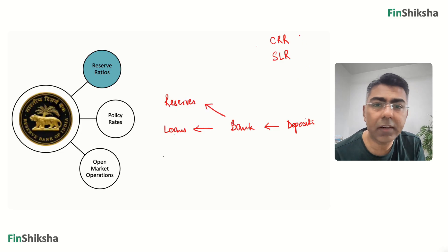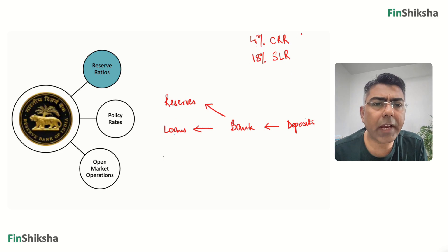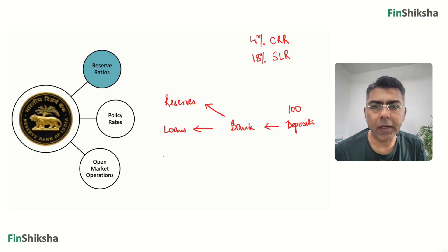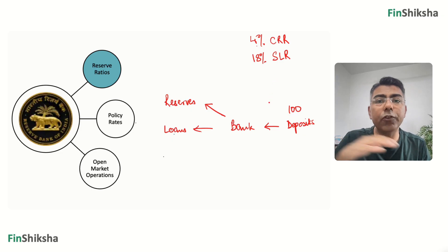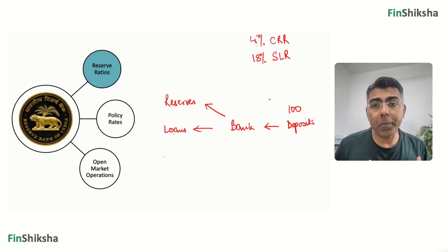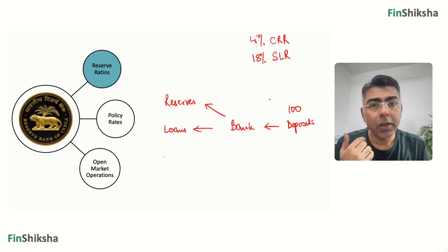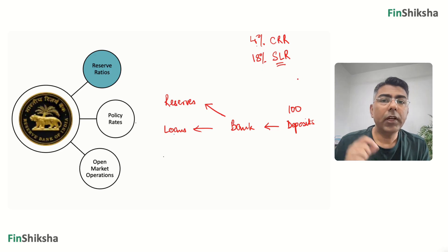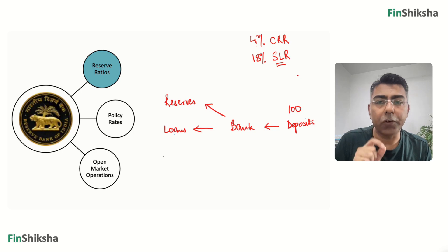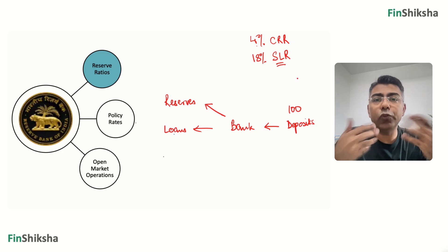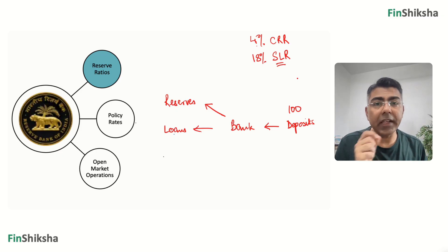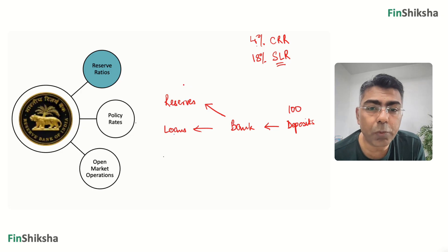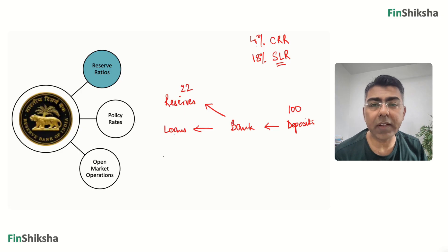As we speak, CRR stands at 4% and SLR stands at 18%. CRR means if a depositor puts in 100 rupees, 4 rupees has to be kept aside as cash with RBI, and RBI pays no interest on this — it's money sitting idle from the bank's perspective. The other 18 rupees out of every 100 is kept in the form of very liquid bonds, typically government bonds or gold, that can be sold immediately to raise cash. So out of 100 rupees, 22 rupees (4 plus 18) is put aside as reserves.